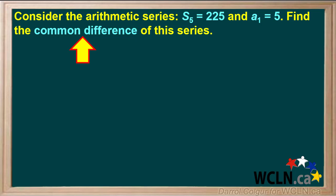We're given that in an arithmetic series, the sum of the first five terms, S5, is equal to 225, and term A1 equals 5. We're asked to find the common difference in this series.